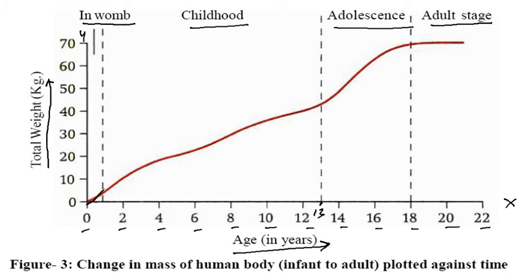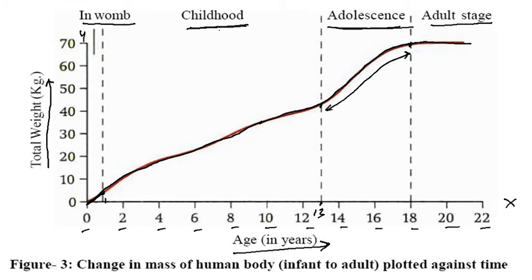The graph is going like this — the growth is always at a constant rate. From 0 to 1 year (infancy), growth is very fast, but then gradually it decreases. After 13 years, growth becomes very high again up to 18 years — that portion shows very high growth. The age from 13 to 18 is called adolescence; before this is childhood, the first stage is infancy, and the last is adult. The adult stage shows no further growth.